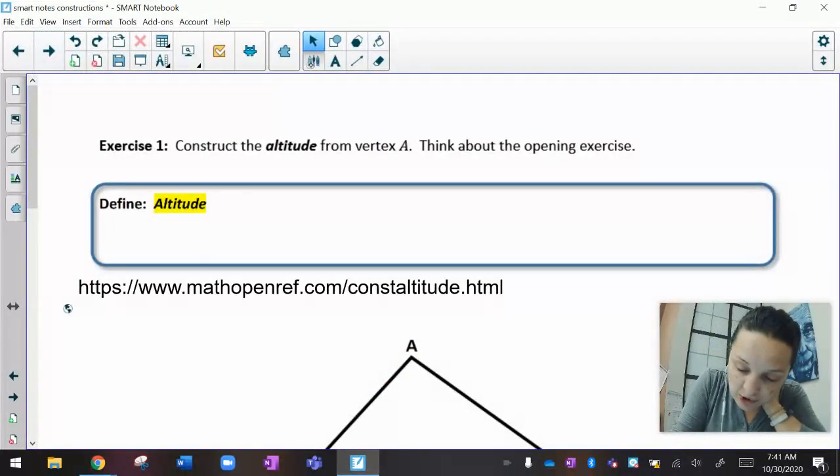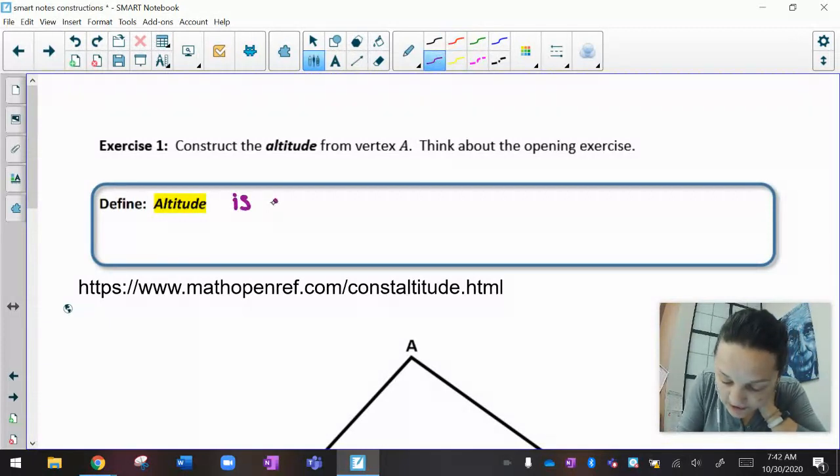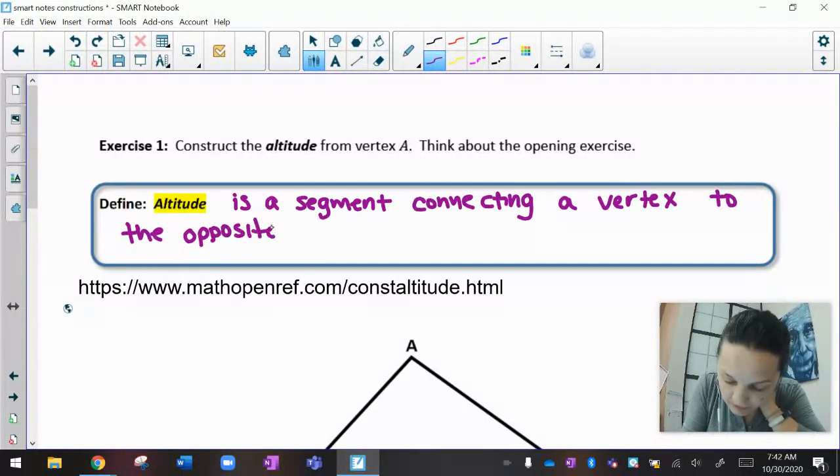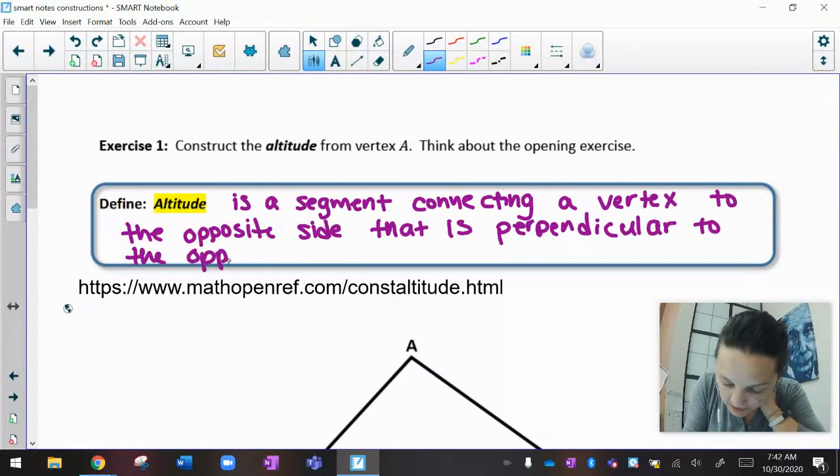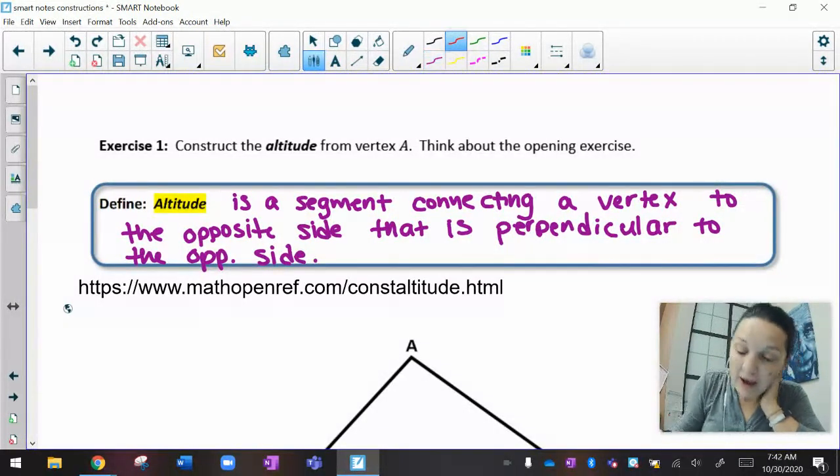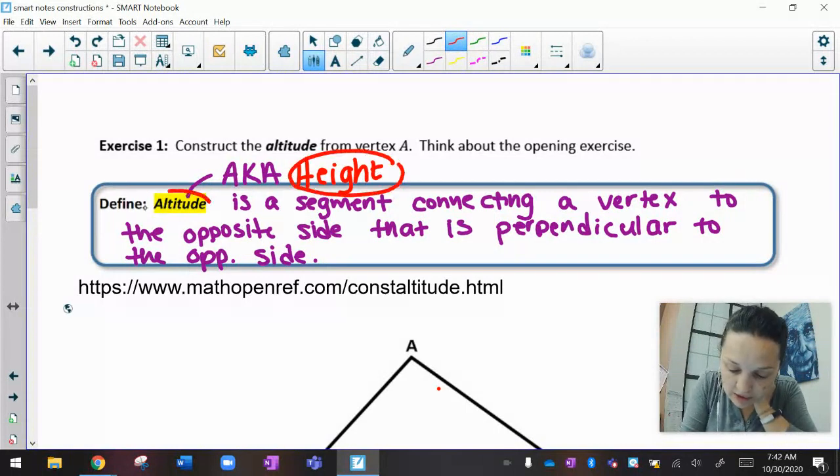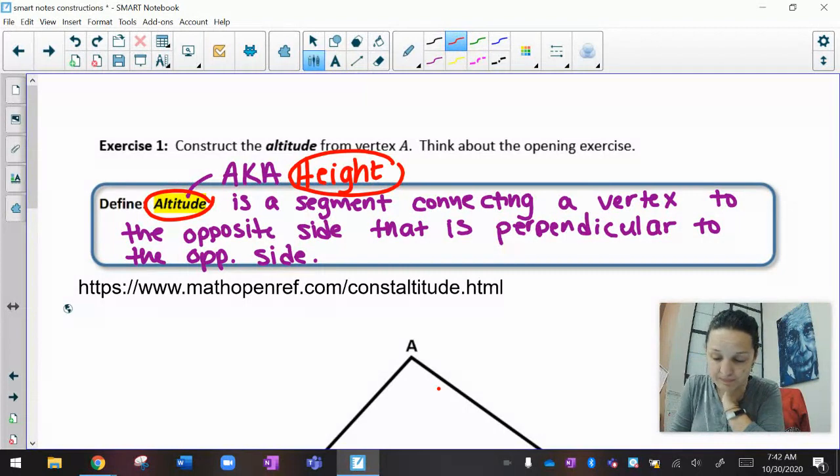Back to our notes. Another vocabulary term: construct the altitude. The altitude of a triangle is a segment connecting a vertex to the opposite side that is perpendicular to the opposite side. And altitude has another easier word. An altitude is also known as a height. So altitude and height are relatively synonymous.